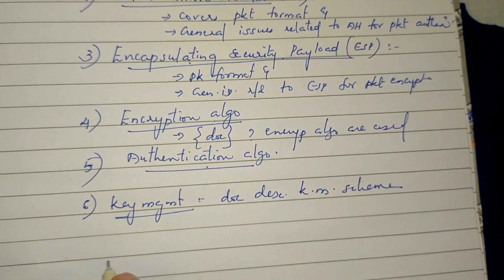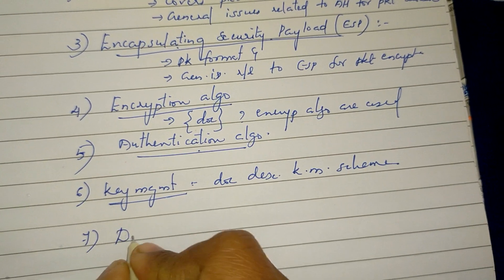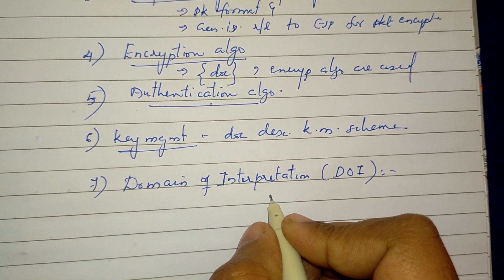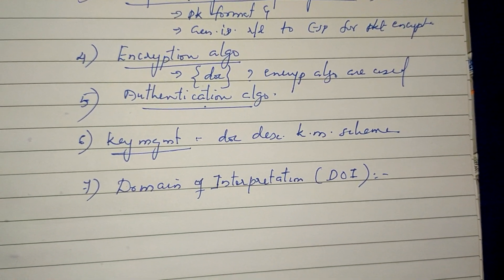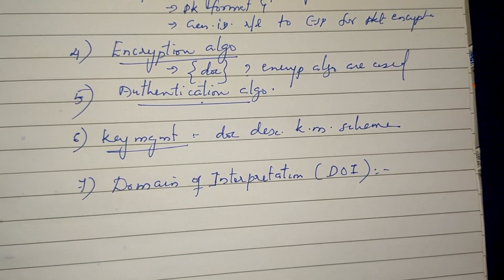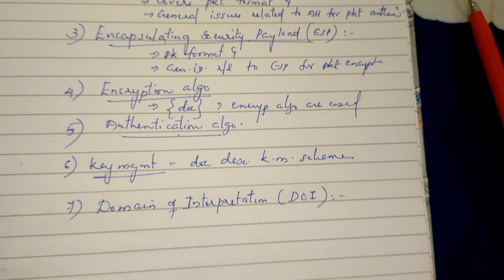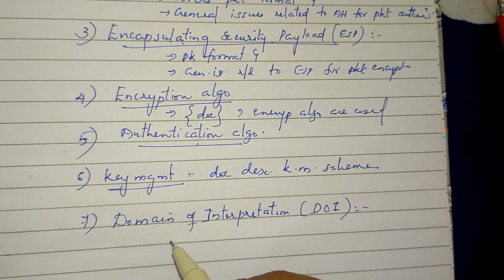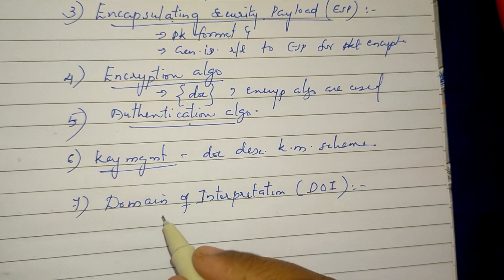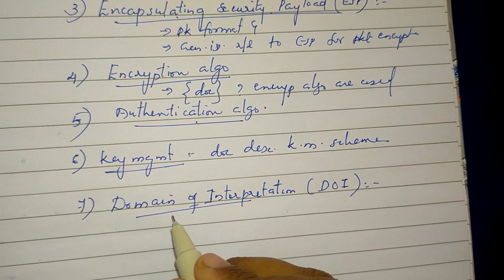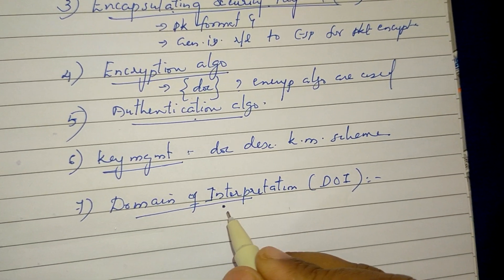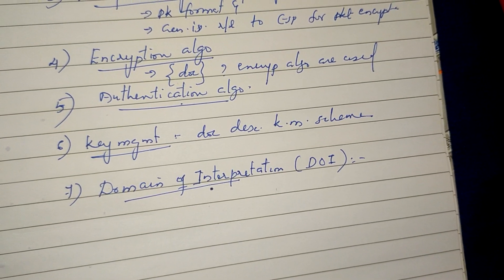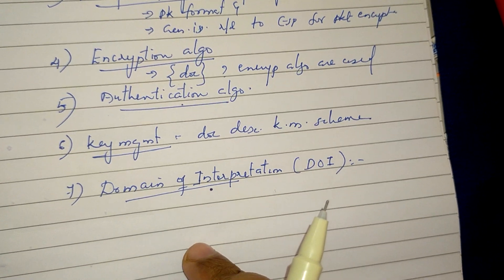The seventh and last group is Domain of Interpretation. It contains values which are useful for the other documents, specifically the values needed for the other documents to relate to each other.